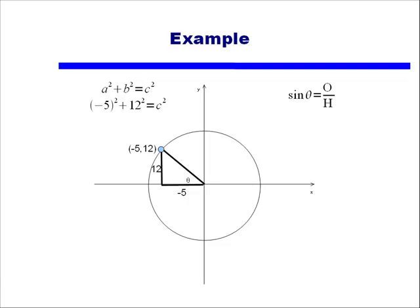Remember a squared plus b squared equals c squared, for a right triangle. So we'll take our two legs, negative 5, square that, and add to that 12 squared, and we'll get c squared.